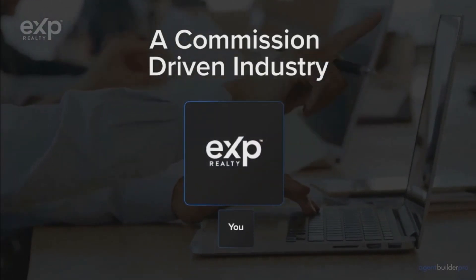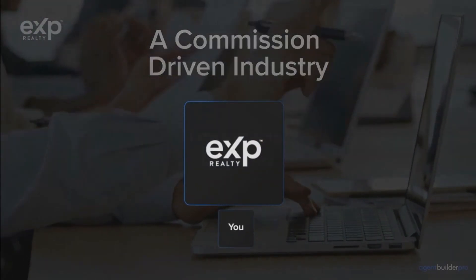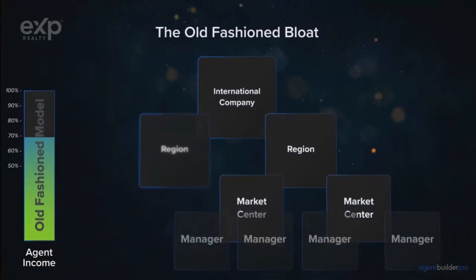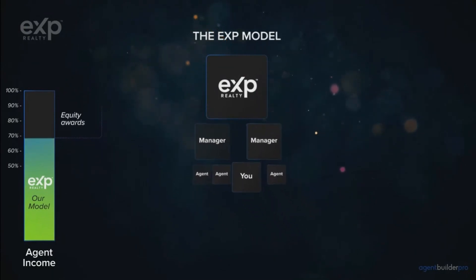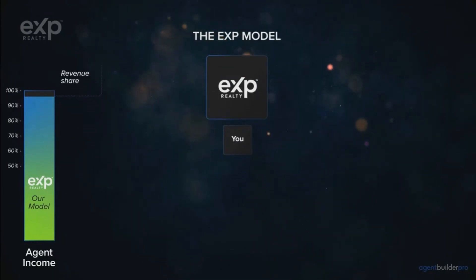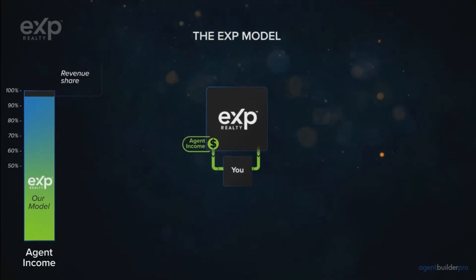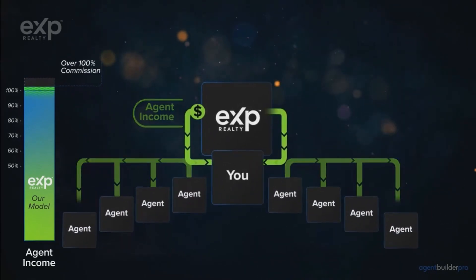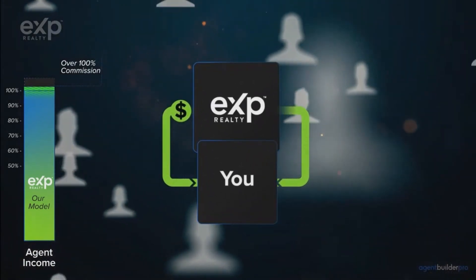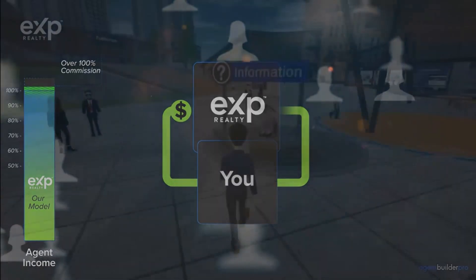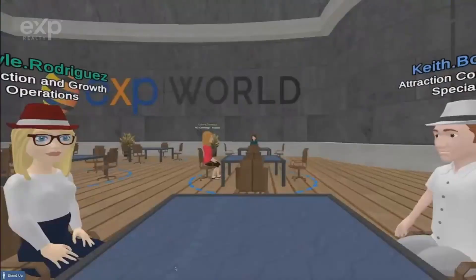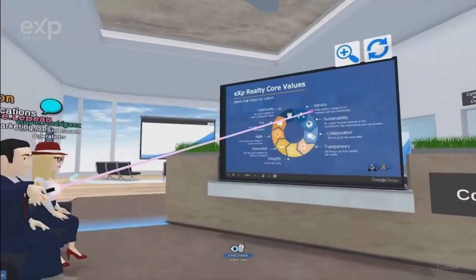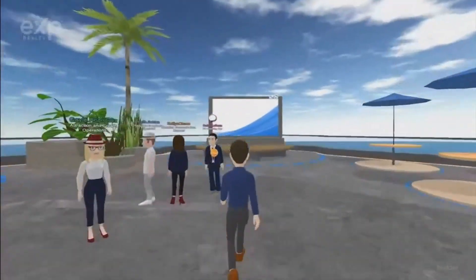The evolution of real estate brokerages has always been driven by how agents get paid, clearly seen with eXp's growth compared to old-fashioned models. At eXp Realty, we've eliminated old-fashioned bloat by removing franchises, territories, brick and mortar, and redundant layers of management. By doing this, we've created the opportunity to give equity back to agents and made the agent the focal point of their business, with multiple income opportunities and a fully immersive cloud office environment with 24/7 access to collaborative tools, coaching, support, and socialization.